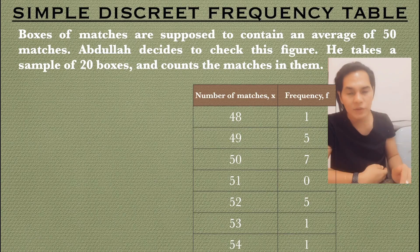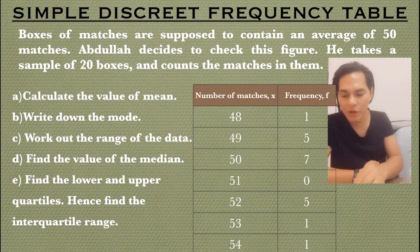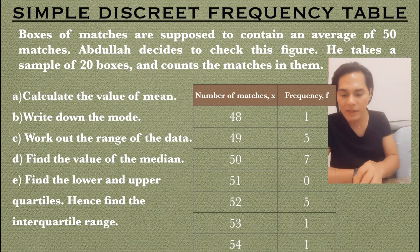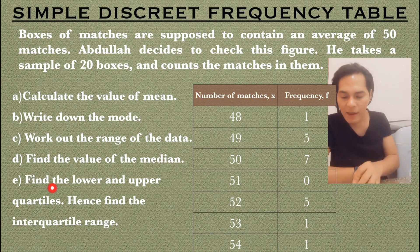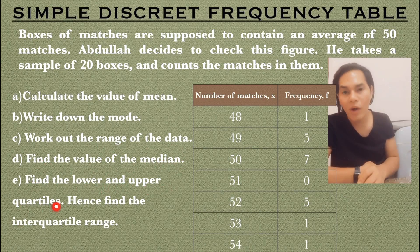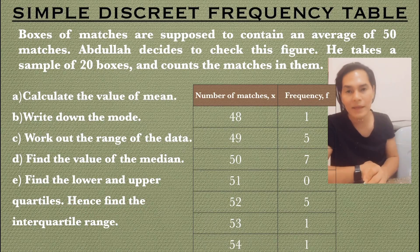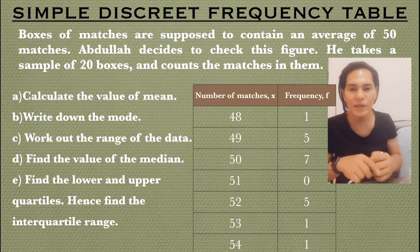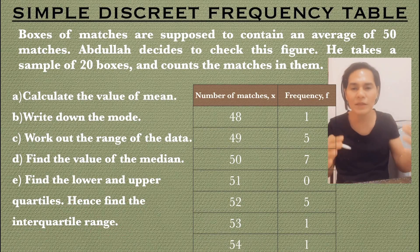The questions are: (A) calculate the value of the mean, (B) write down the mode, (C) work out the range of the data, (D) find the value of the median, (E) find the lower and upper quartiles, and hence find the interquartile range. These are the things we are going to work on.